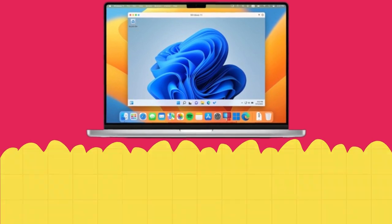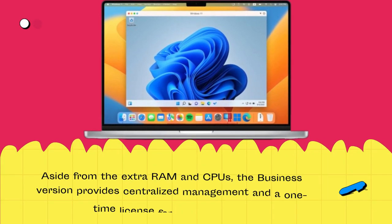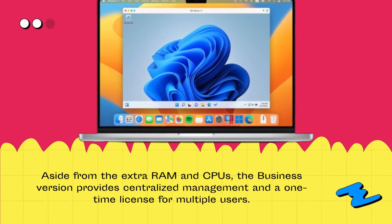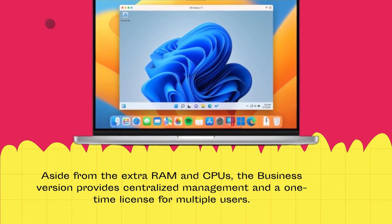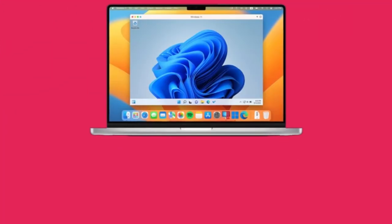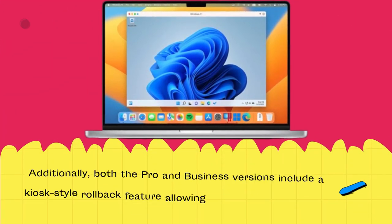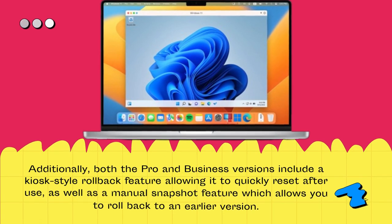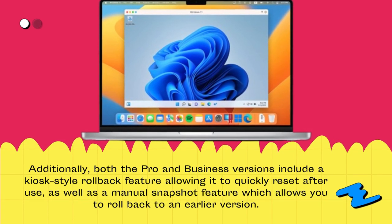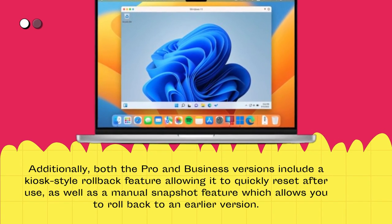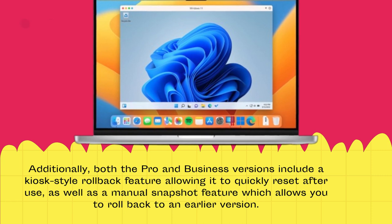Aside from the extra RAM and CPUs, the Business version provides centralized management and a one-time license for multiple users. Additionally, both the Pro and Business versions include a kiosk-style rollback feature allowing it to quickly reset after use, as well as a manual snapshot feature which allows you to roll back to an earlier version.